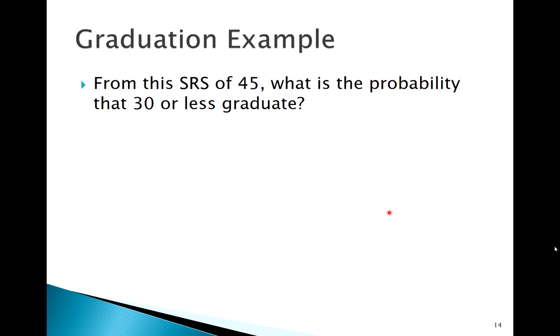So what if we wanted to do something like this? So with n equal to 45, what's the probability 30 or less graduate? So with the exact binomial probability, now we want to think about trying to do this by hand. X less than or equal to 30. That would be 29 plus 30 plus 28, 27, all the way down to 0. That'd be like 31 different terms to calculate if you tried to do it by hand.